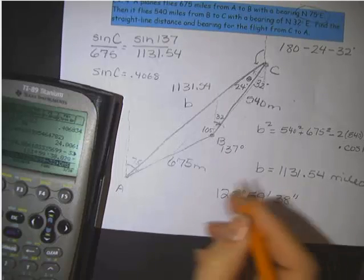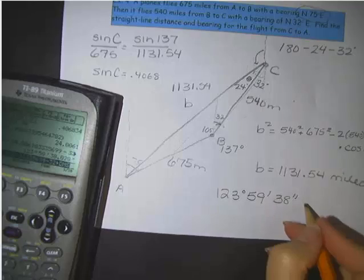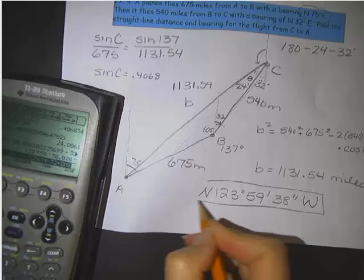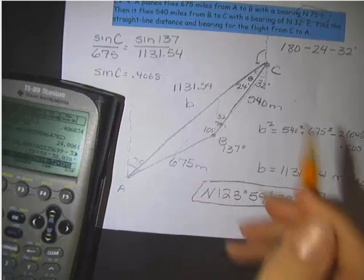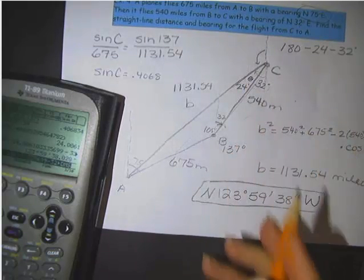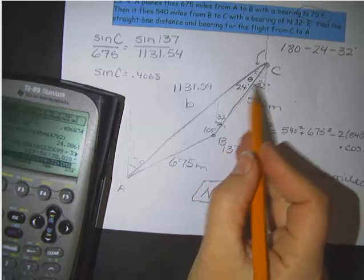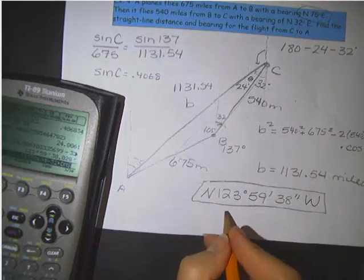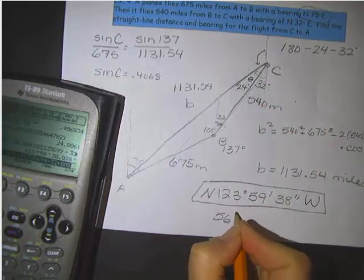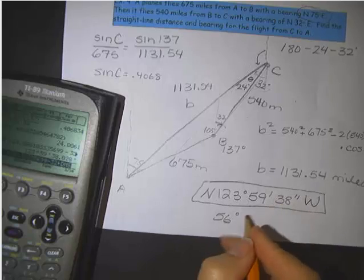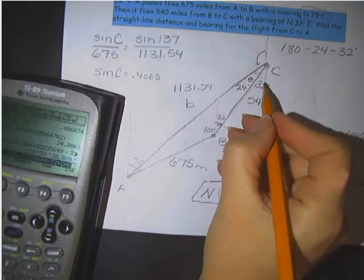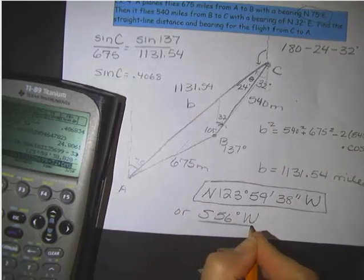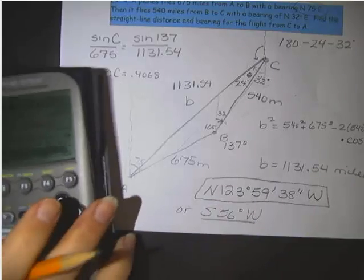Now, make sure you put the direction. That is going west of north. And that's an excellent answer for bearing. Now, if I wanted to use the other bearing, I could have added the 24 and 32, and perhaps that would have been easier. That's 56. Of course, I could have made it more exact in degrees, minutes, seconds. 56 degrees. And then this one, I'm going west of south. So that answer would be perfectly acceptable as well. You can pick either one.